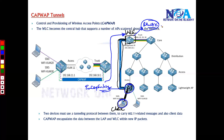The WLC then examines the frame, identifies the device based on its MAC address — similar to normal switching — identifies the VLAN, and forwards the traffic over the trunk link to the respective VLAN it needs to reach.